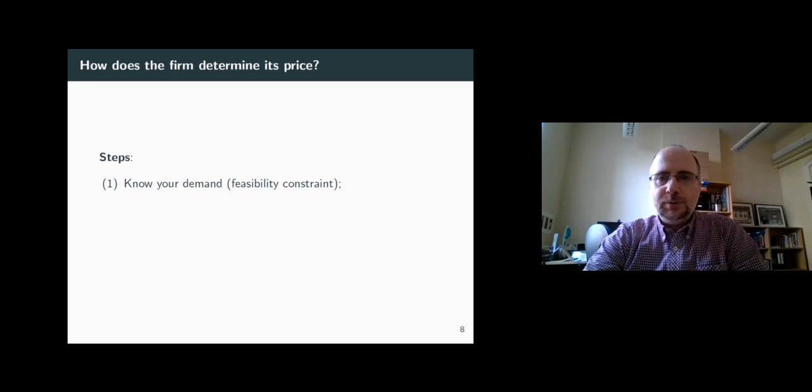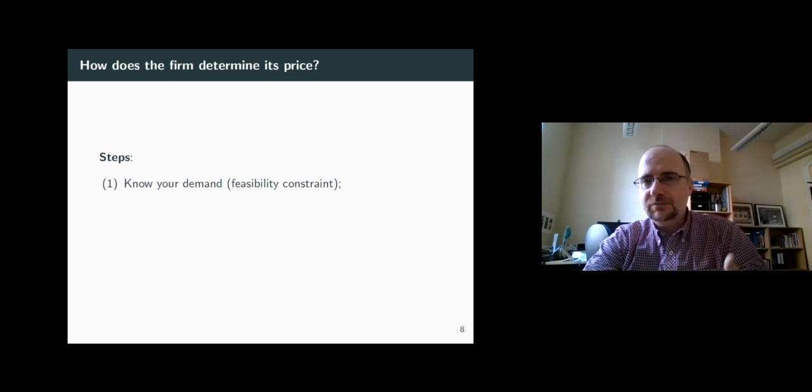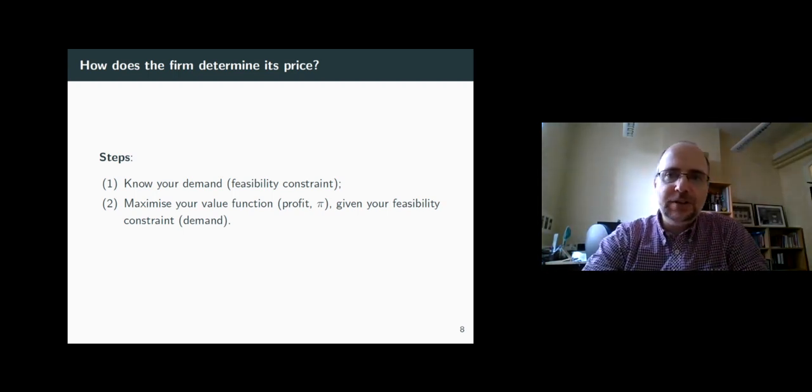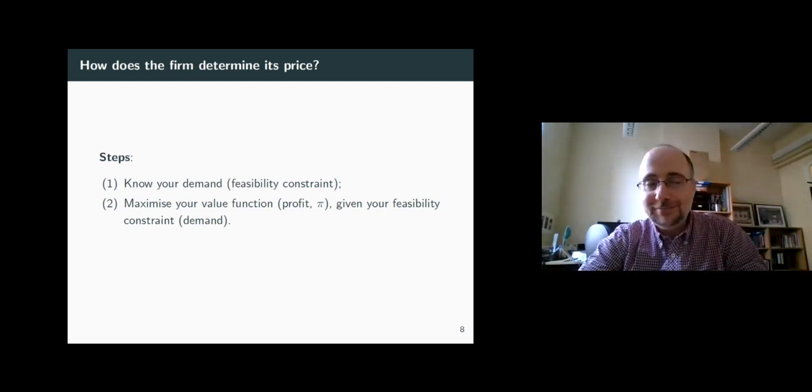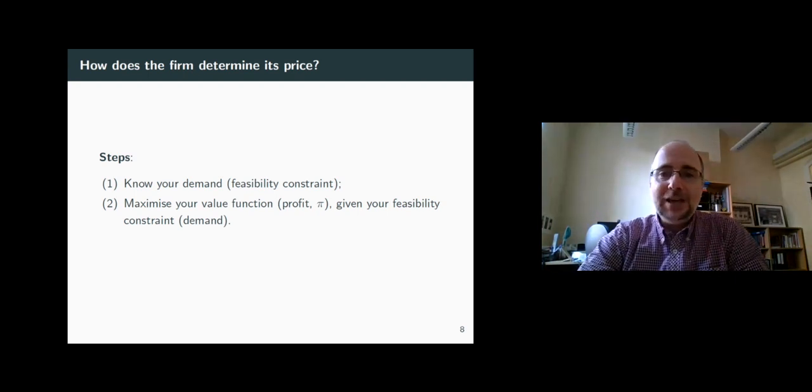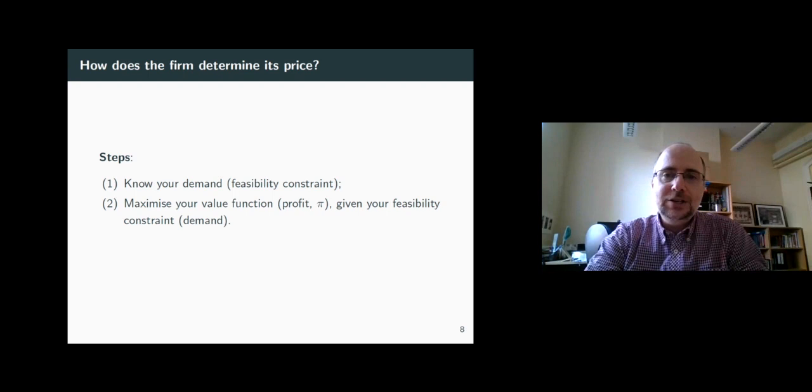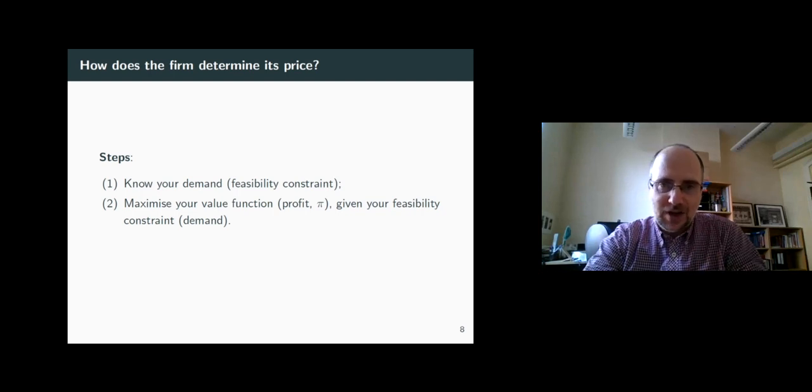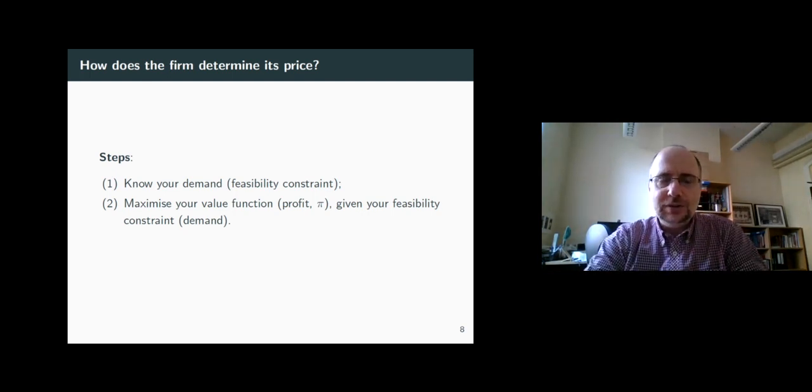But how exactly is the firm doing this? The first element of our optimization process is your constraint, your market. This is what your feasibility constraint was always about. How much you can actually achieve in terms of profits. Once you know your market, then you're trying to squeeze as much profit from it as you can. Making less profit than the market allows you to is a pure waste of resources and probably a waste of talent. And making more than the market allows you to is just infeasible. So again, just like with the consumer, there will be a point which satisfies two conditions at the same time. It maximizes the value function that the agent cares about. In this case, it's the profit.